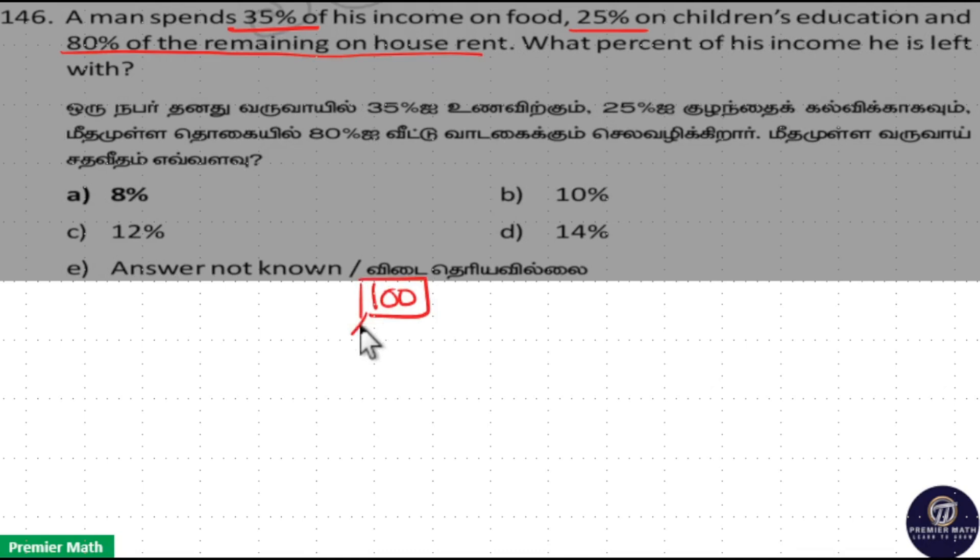Out of this, 35% of 100, that is 35 rupees, he spent on food, and 25% of 100 means 25 rupees he spent on children's education.